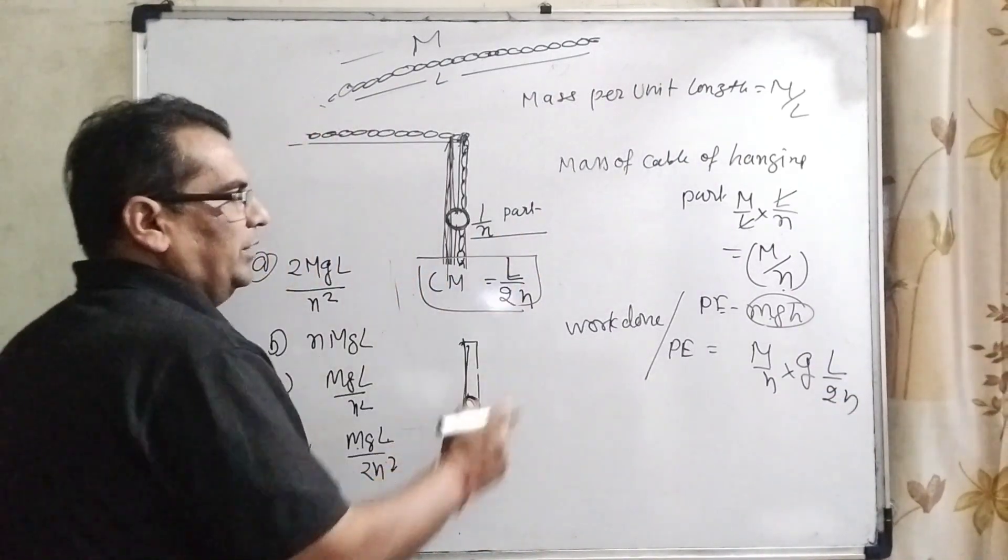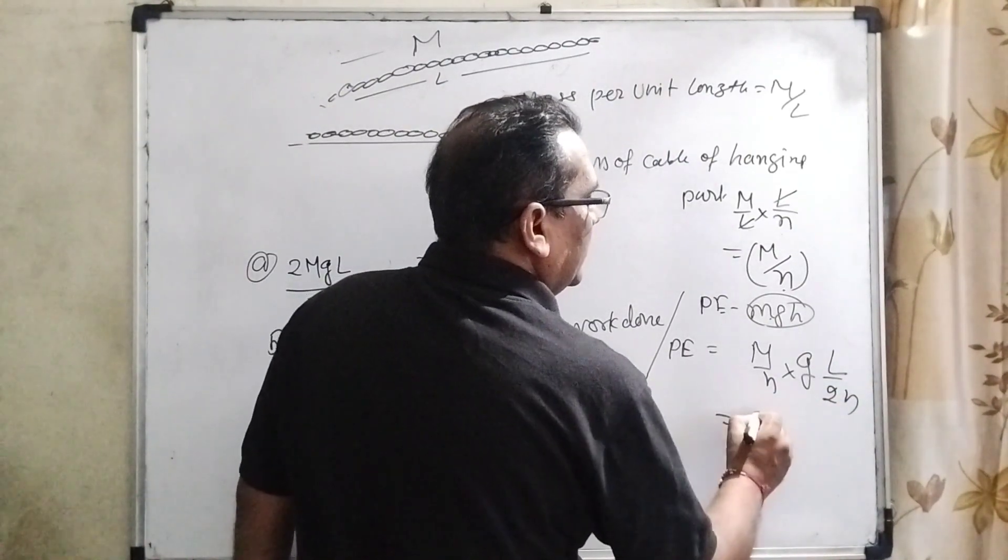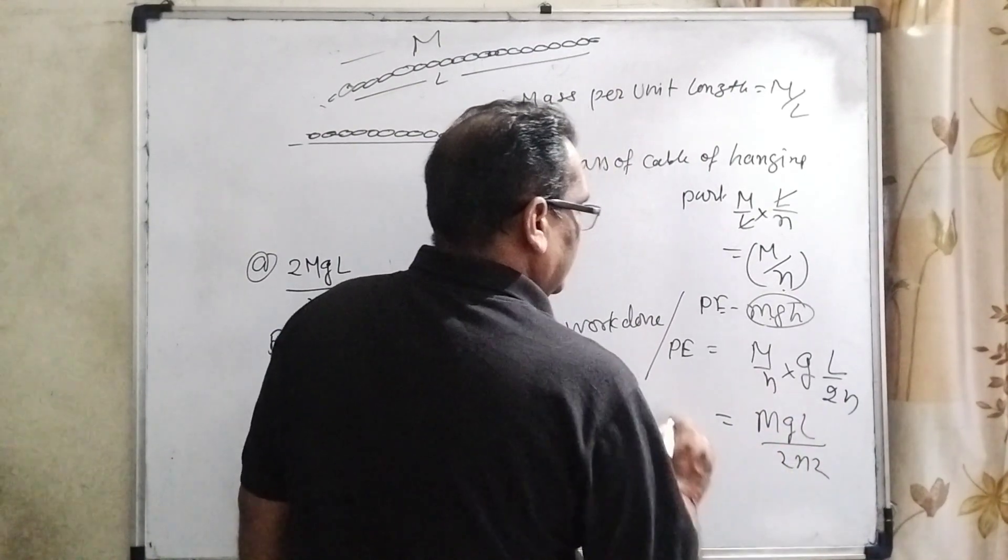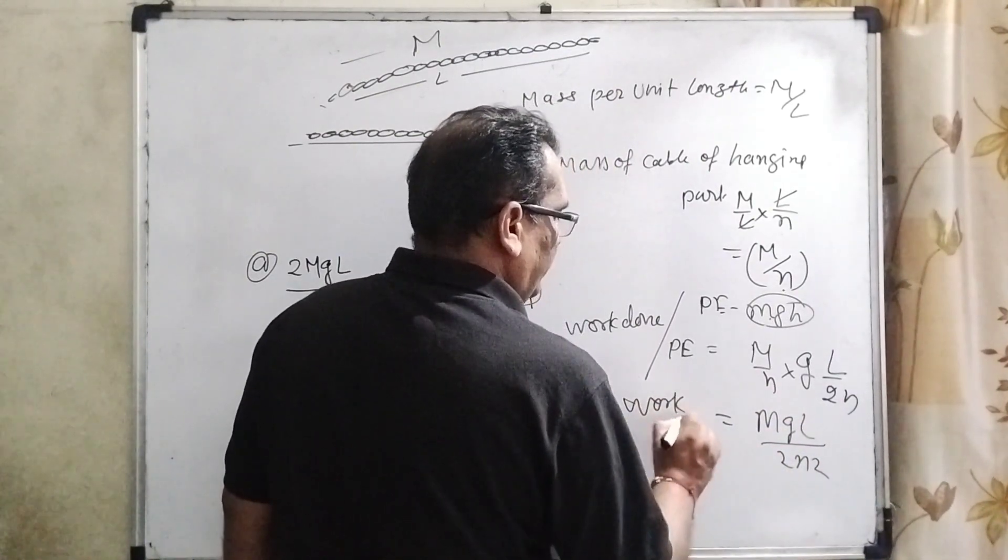Height of the center of mass is L by 2n. Here L by 2n. Now MgL by 2n square. This is amount of work done.